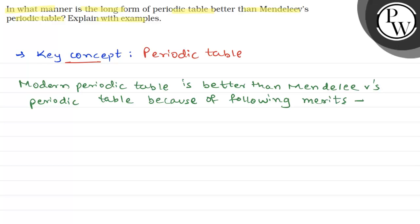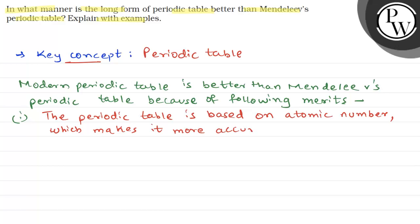The first one is: The Modern Periodic Table is based on atomic number, which makes it more accurate.